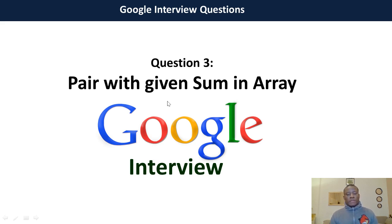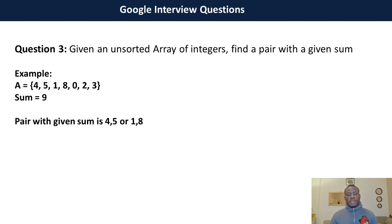This is a question you are likely to encounter in a Google interview, or an interview with another company like Amazon, Facebook, or Microsoft. The question is: find a pair with a given sum in an array. You are given an unsorted array of integers and you need to find a pair with a given sum. For example, array A equals 4, 5, 1, 8, 0, 2, 3 and the sum equals 9. The output would be the indices where the pair is found.